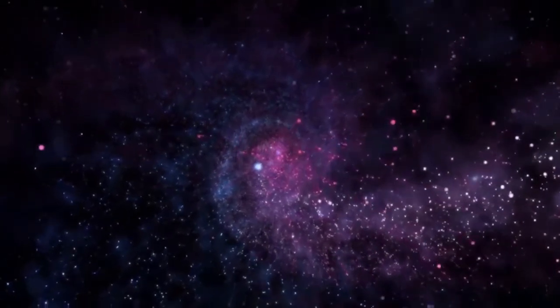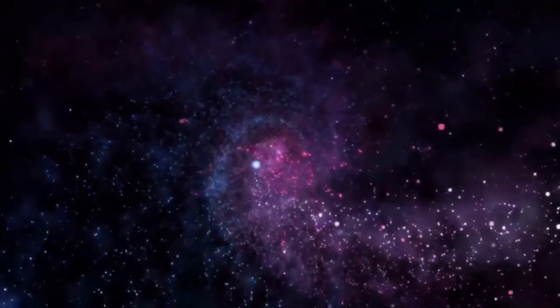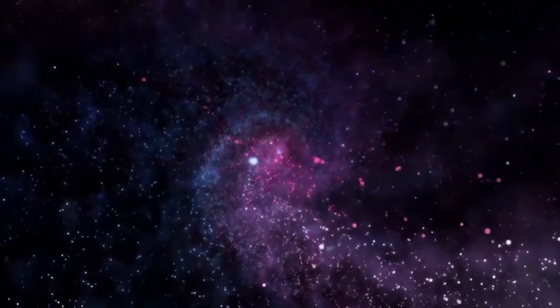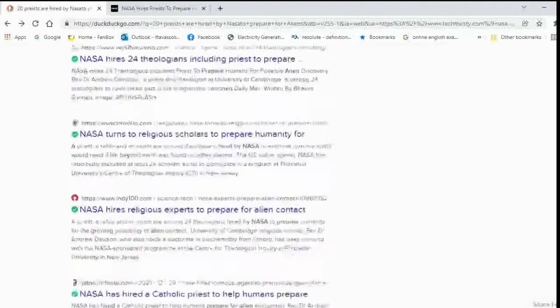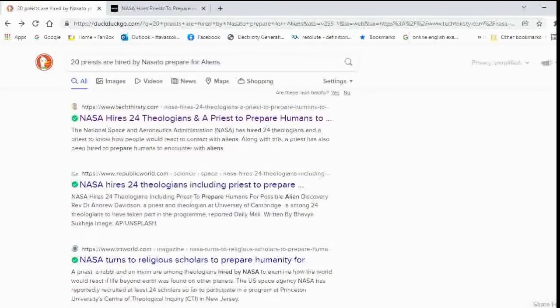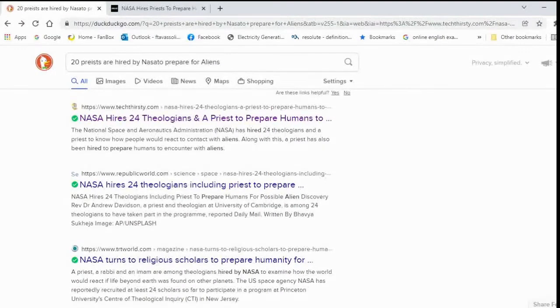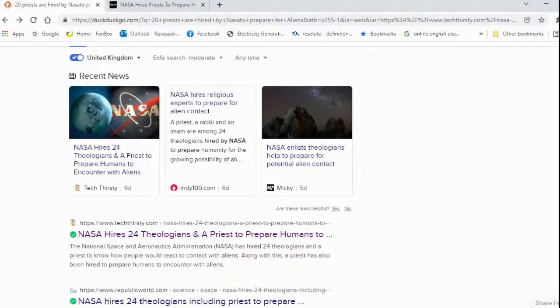Now with all that said, recently it's been on the news. You can Google it, you can search it on the internet, it'll just come up. As you can see, it's all over the internet. If you type NASA hires 24 theologians and a priest to prepare humans for aliens, you understand what they're trying to do. To prepare humans to encounter with aliens. Now they want to know what kind of reactions you would have as Christians of different denominations if you actually see them.